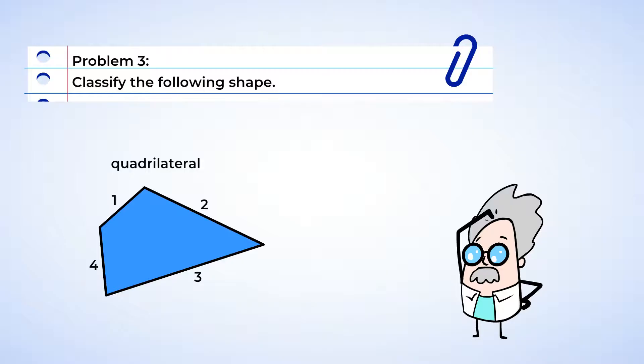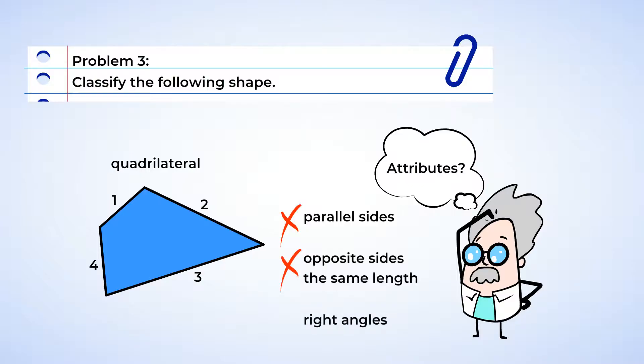Now we need to find out if it is a specific quadrilateral by checking its attributes. Does it have any parallel sides? No. It looks like if we extend the opposite sides they would cross. Are any of the opposite sides the same length? Nope. Doesn't look like it.